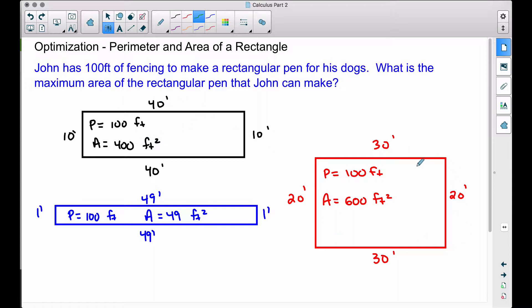This red one here, again, we have the same perimeter, 30 plus 20 plus 30 plus 20. The area of that rectangle is 600 square feet.